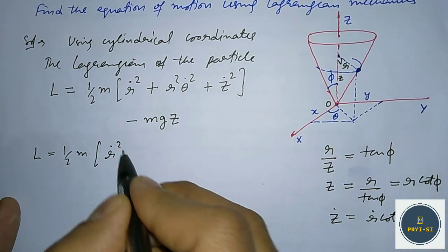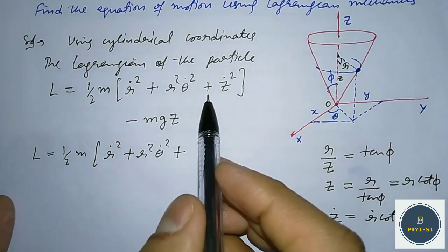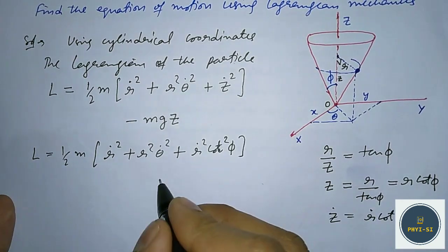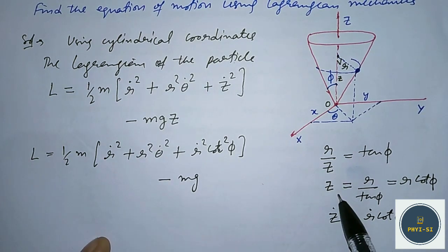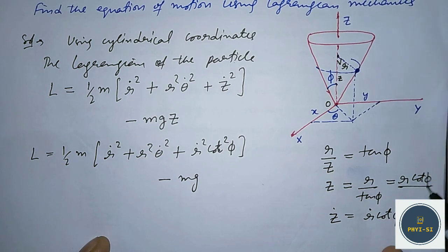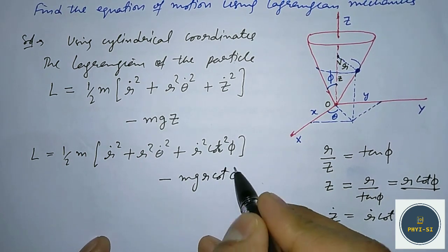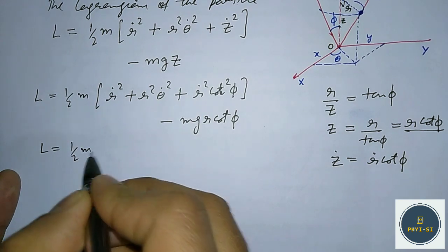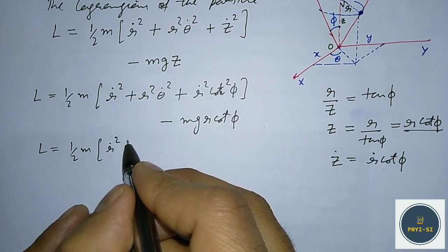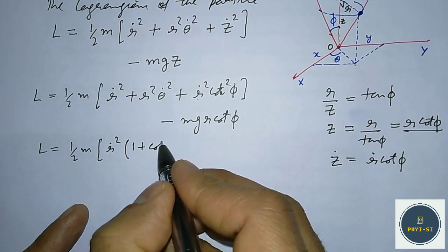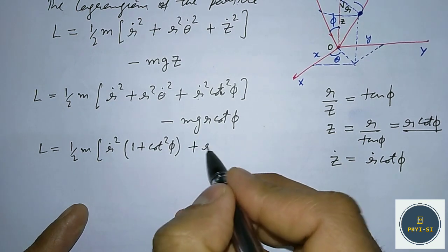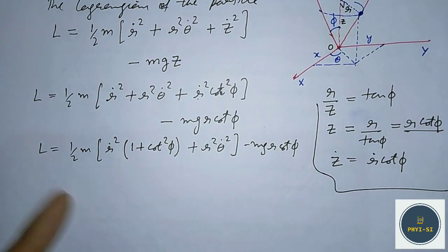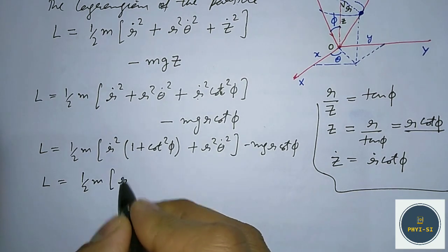The potential energy is mgZ. Substituting the constraint into the Lagrangian, Z is replaced by R·cot φ and ż² becomes ṙ²·cot²φ. The Lagrangian simplifies to: L = (1/2)m[ṙ²(1 + cot²φ) + r²θ̇²] − mgR·cot φ.